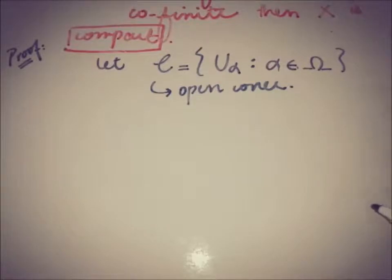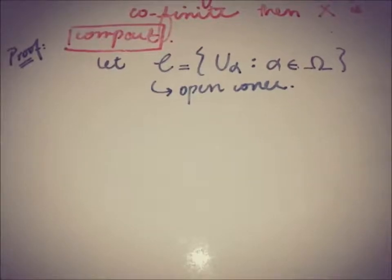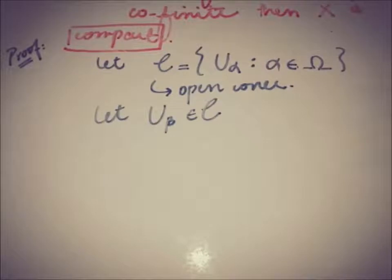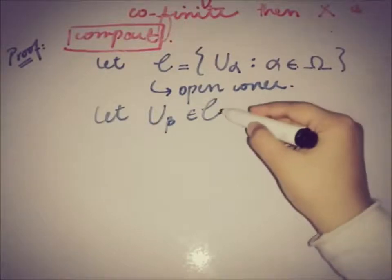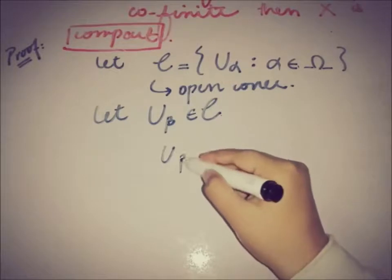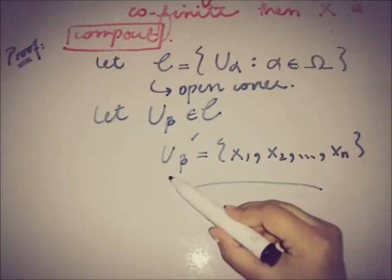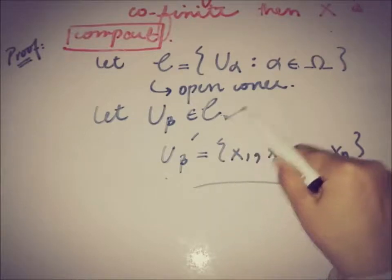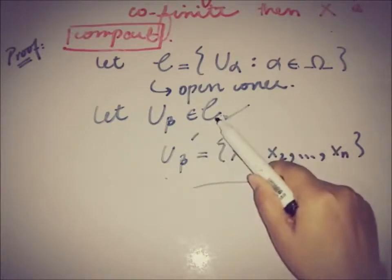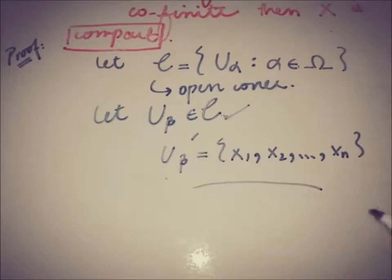Now let's take an element from that open cover and call it U_β. Now taking the complement of that element of that open cover C, it will be a finite set because the finite complement topology was discussed. This set is finite because of the element from that open cover and the complement is finite due to the finite complement topology.